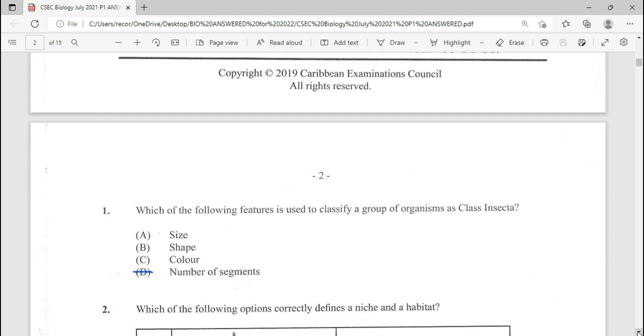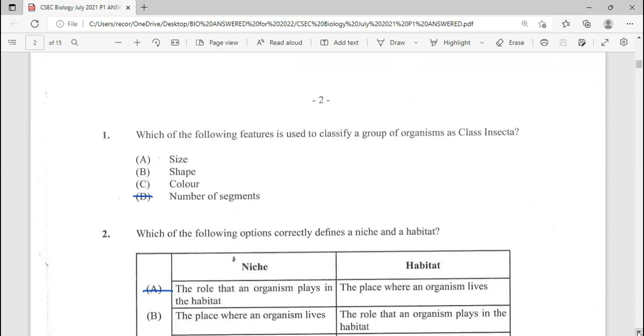Our first question reads, which of the following feature is used to classify a group of organisms as class Insecta? Answer there, B, number of segments.